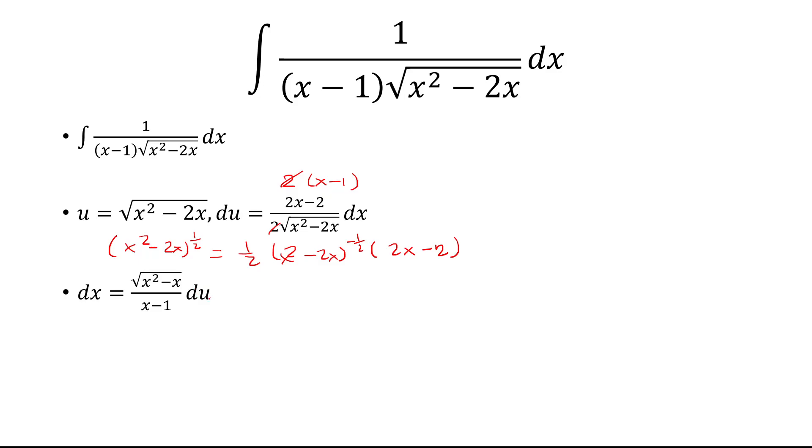Okay, so we'll replace this in for dx. So, dx gets replaced by this whole thing. And notice the square root of x squared minus x will cancel.